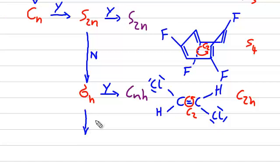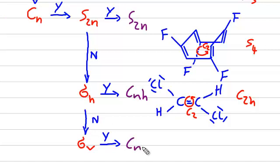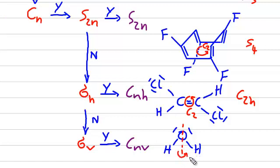If there is no horizontal mirror plane, we should look for a vertical mirror plane. If we find one, our point group will be called CNV. Our water molecule is a perfect example for such a point group. We already know that right here we have our C2 rotation axis, and in addition we have the vertical reflection plane right here going through the oxygen atom.